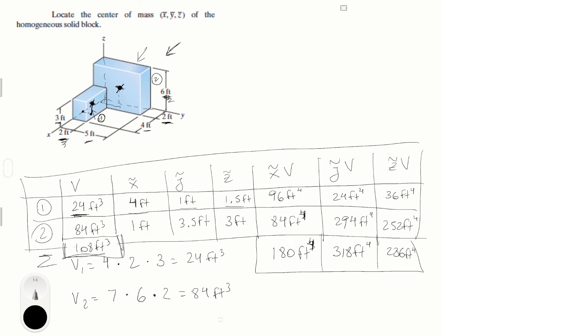So now that we have our column we can find x̄, ȳ, and z̄ by dividing each of the results by the sum of the volume. And if you put your units you're going to see that they cancel out perfectly. So this would be 180 over the volume, which is 108 to the third, so what you got left is 1.67, and if you look at your units they cancel out to give you feet, and same for the rest.